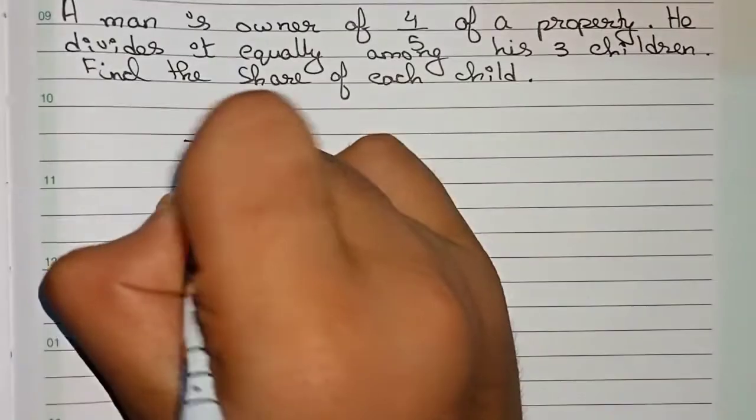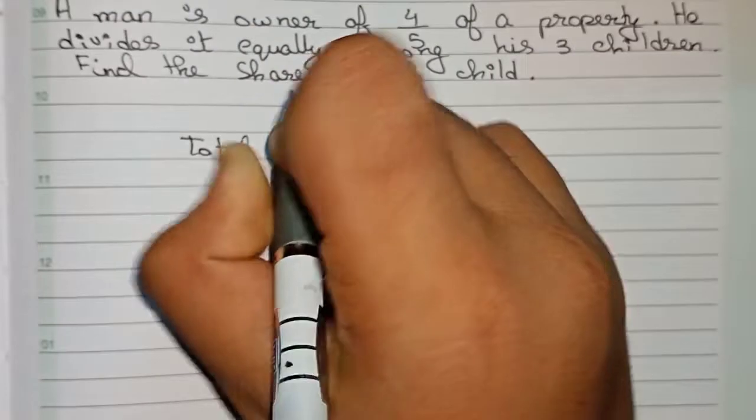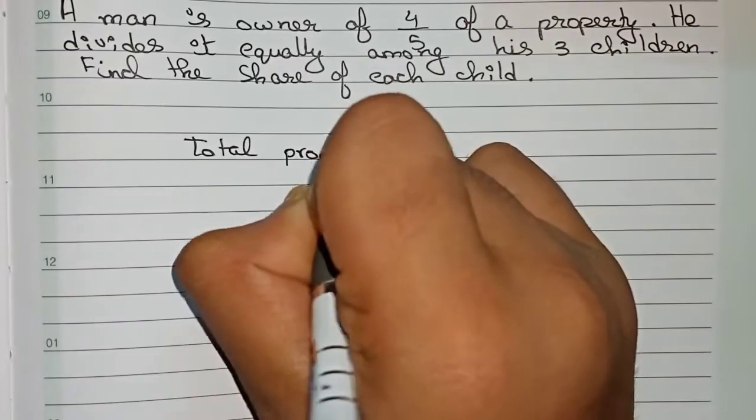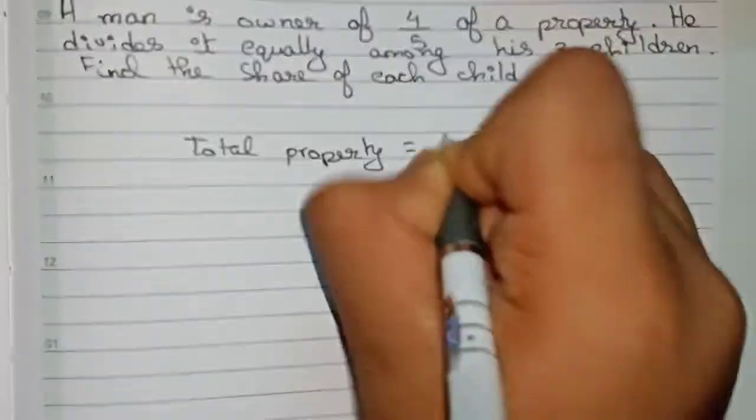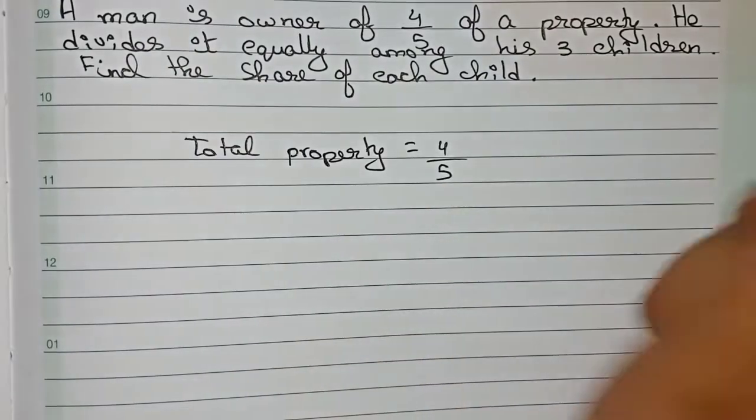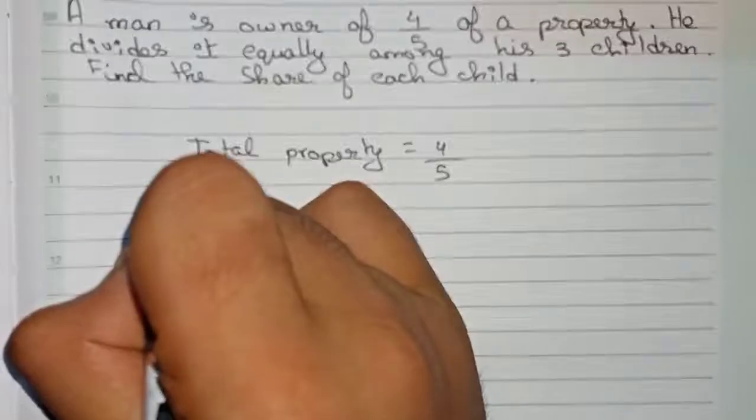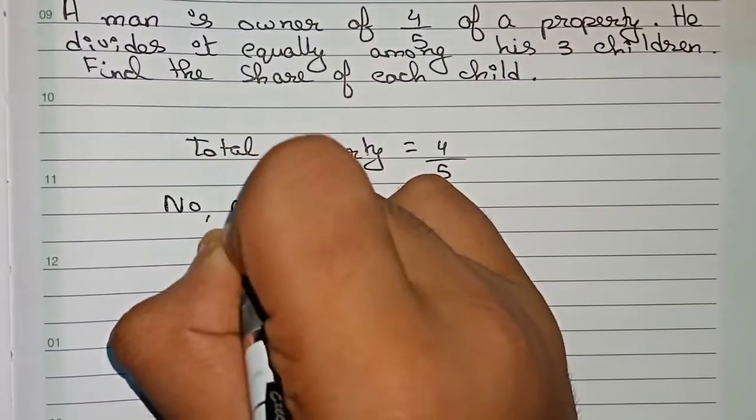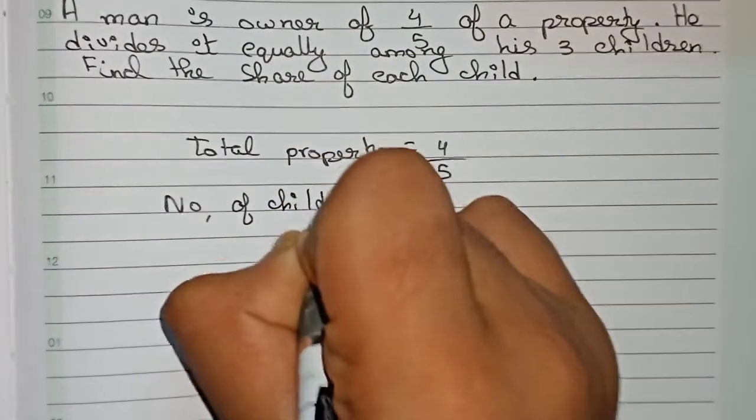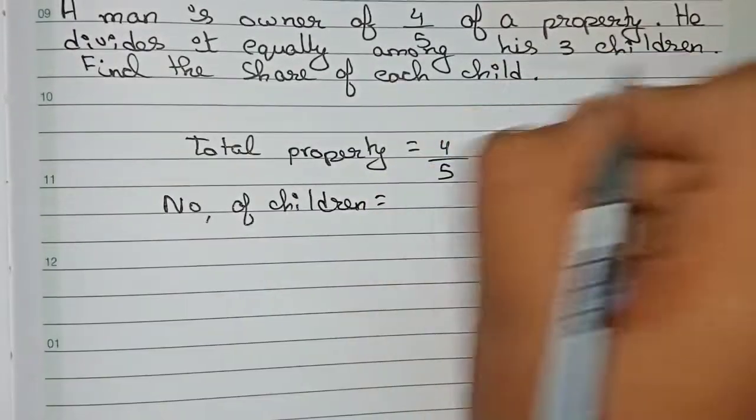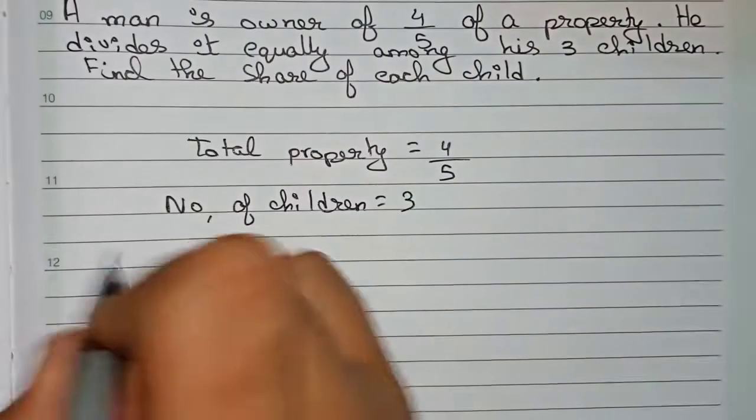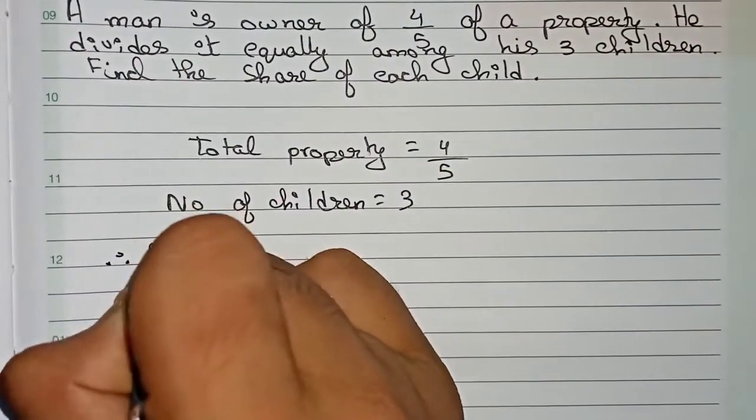So let's solve this. First, you have total property is equal to 4/5. Now, number of children, it is given three children. So now you have to find out the share of each child.